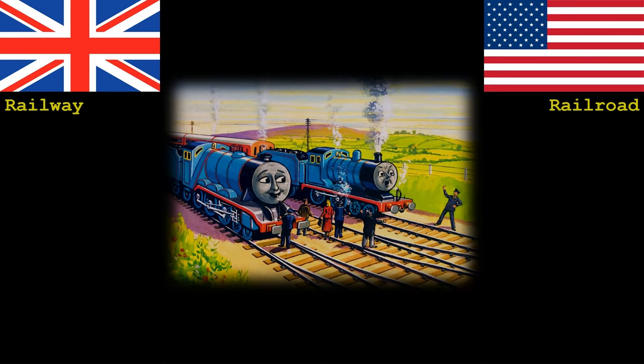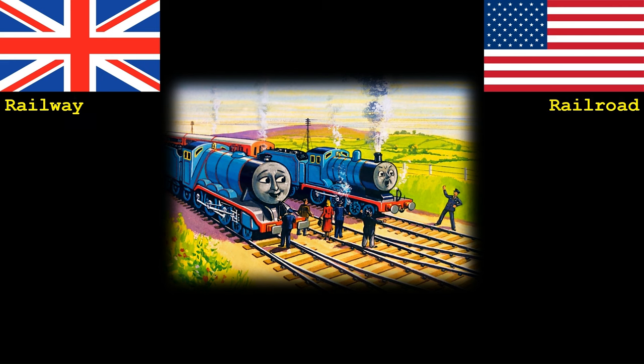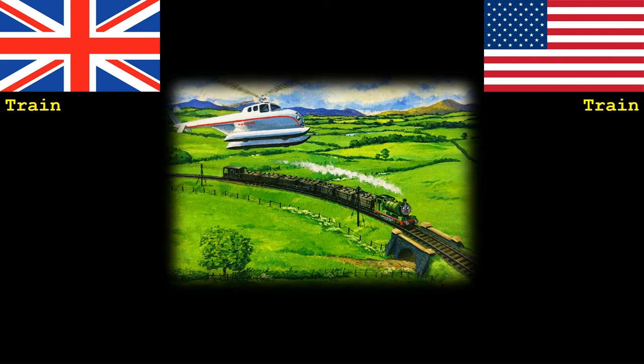To start with, we'll look at some of the basics. Trains of course need to run on tracks. A collection of tracks connected together is known in the UK as a railway. In America you would call this a railroad. On a railway or railroad you will have trains. In the UK and in the US you would just call this a train. However in the UK this may also be known as a rake or a formation, and in America you may also call this a consist.